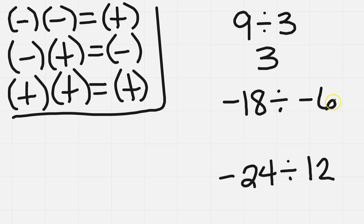If I've got -18 divided by -6, we know a negative and a negative is a positive, so it's just going to be 3.